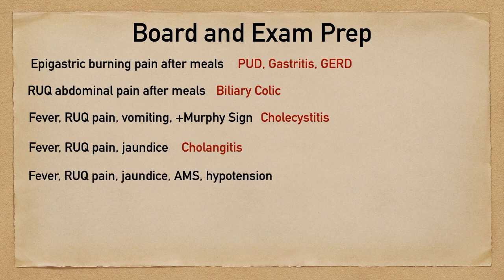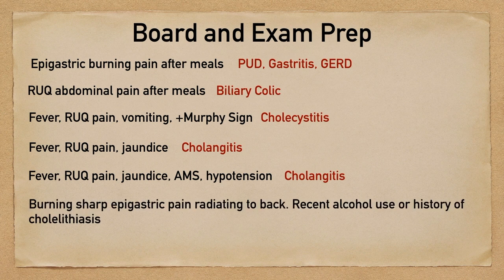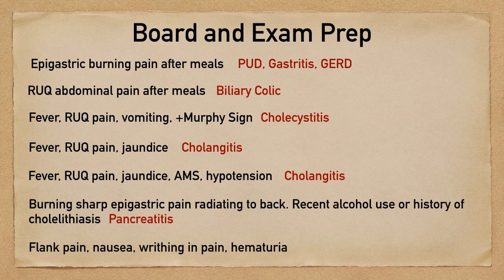If the patient complains of burning sharp epigastric pain that radiates to the back, maybe they had recent alcohol use or ingestion or a history of cholelithiasis — well those are risk factors for pancreatitis, so that's what they're going to be testing you on. If the patient has flank pain, nausea, they're writhing in pain, and they have hematuria, then this one's pretty obvious — it's going to be nephrolithiasis or kidney stones.